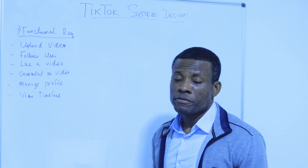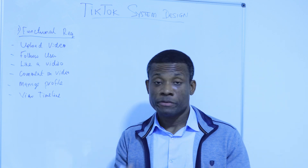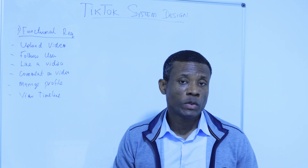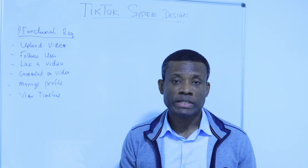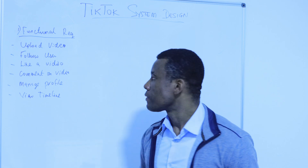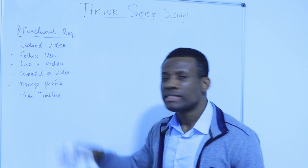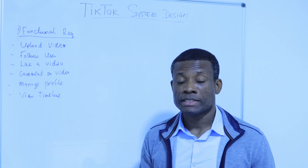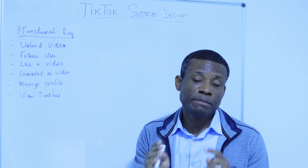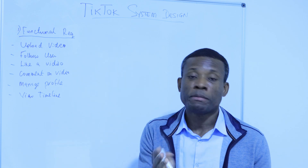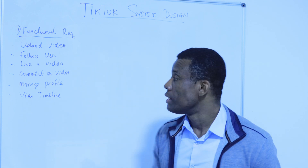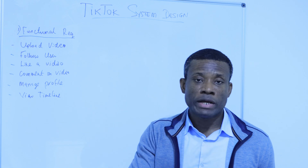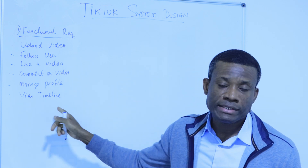If you identify five or six functional requirements and clarify with your interviewer, that's perfectly okay. Listing too many of them is a waste of time — wasting the interviewer's time — because there may be other things they're interested in. Once you've listed around six functional requirements, we're good to move on.